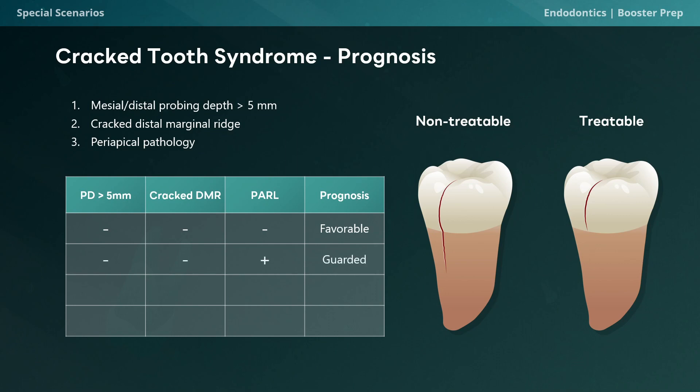In our second scenario, we have a cracked tooth with no large probing depths on the mesial or distal and an intact distal marginal ridge, but we have periapical pathology indicating a necrotic process. In this situation, the prognosis is guarded. Third case: we have a cracked tooth with no periapical pathology and no large probing depths, but we have a cracked distal marginal ridge. The literature shows this significantly affects success rates, so the prognosis becomes guarded as well.